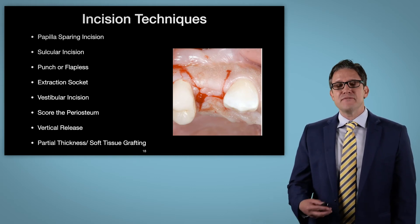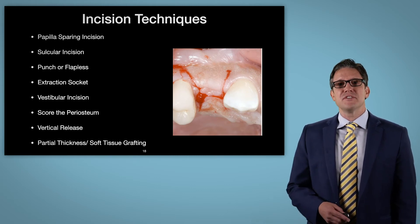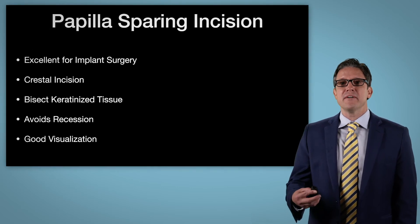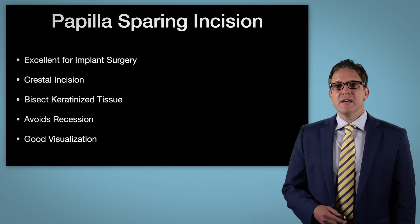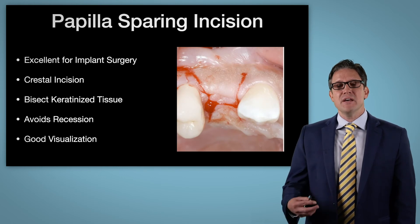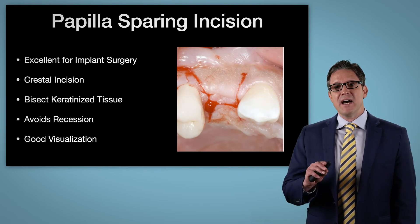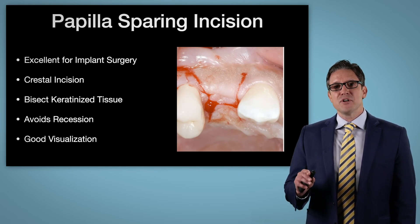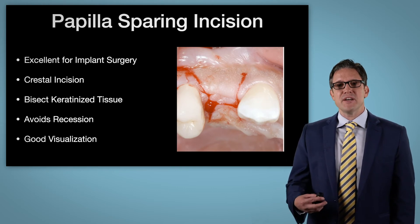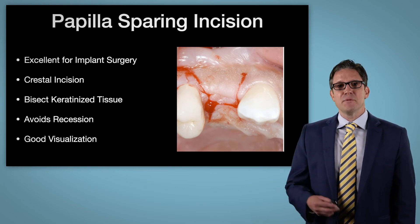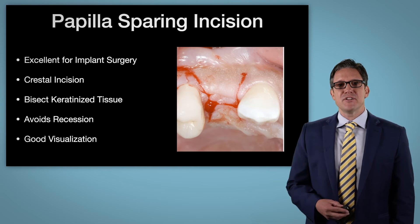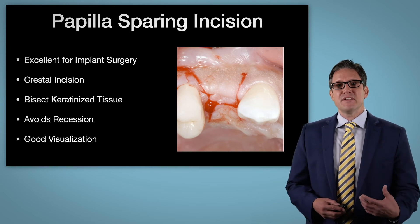Next we'll talk about incision techniques. Our most predictable and safest incision technique in implant dentistry is called the papilla sparing technique. This incision bisects the ridge while at the same time preserving the papilla on either side, which prevents recession and promotes healing in the area.